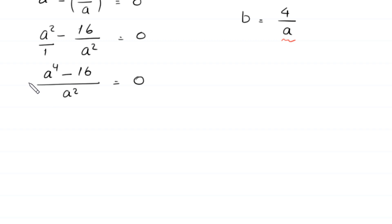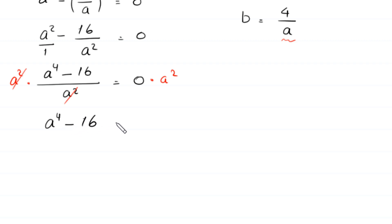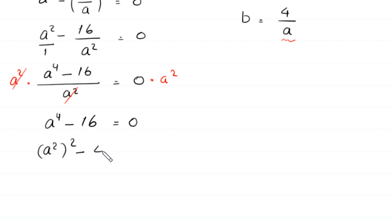We multiply both sides by a squared. The a squared cancels, leaving us with a to the power 4 minus 16 equals 0. We rewrite this as a squared whole squared minus 4 squared equals 0.